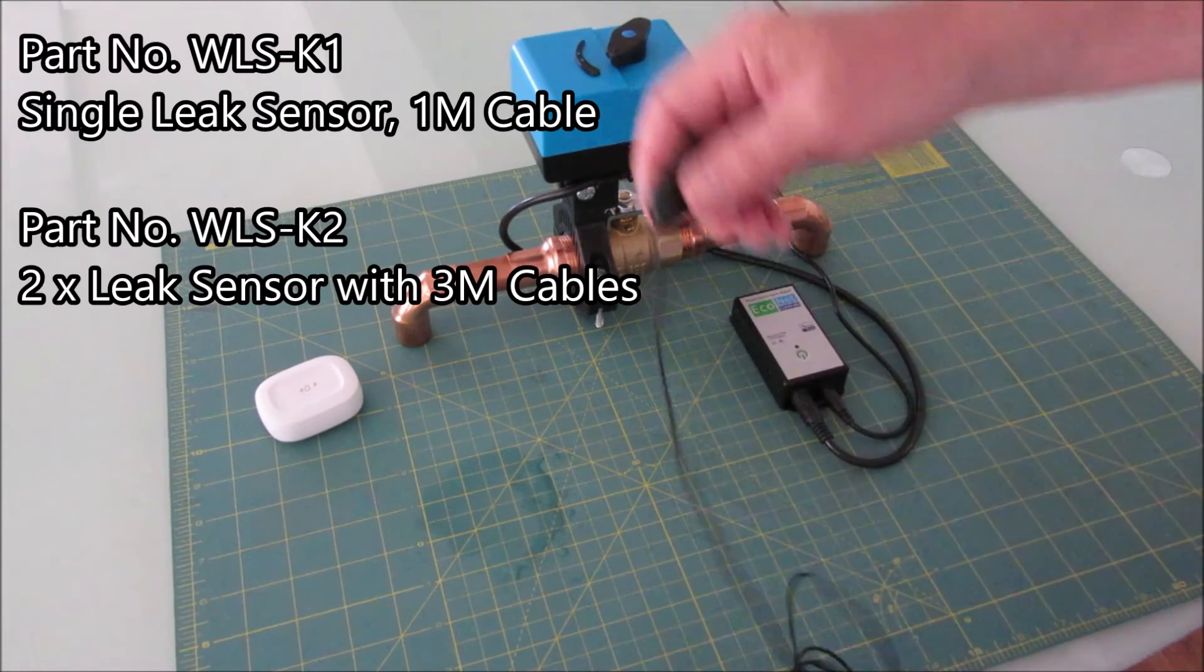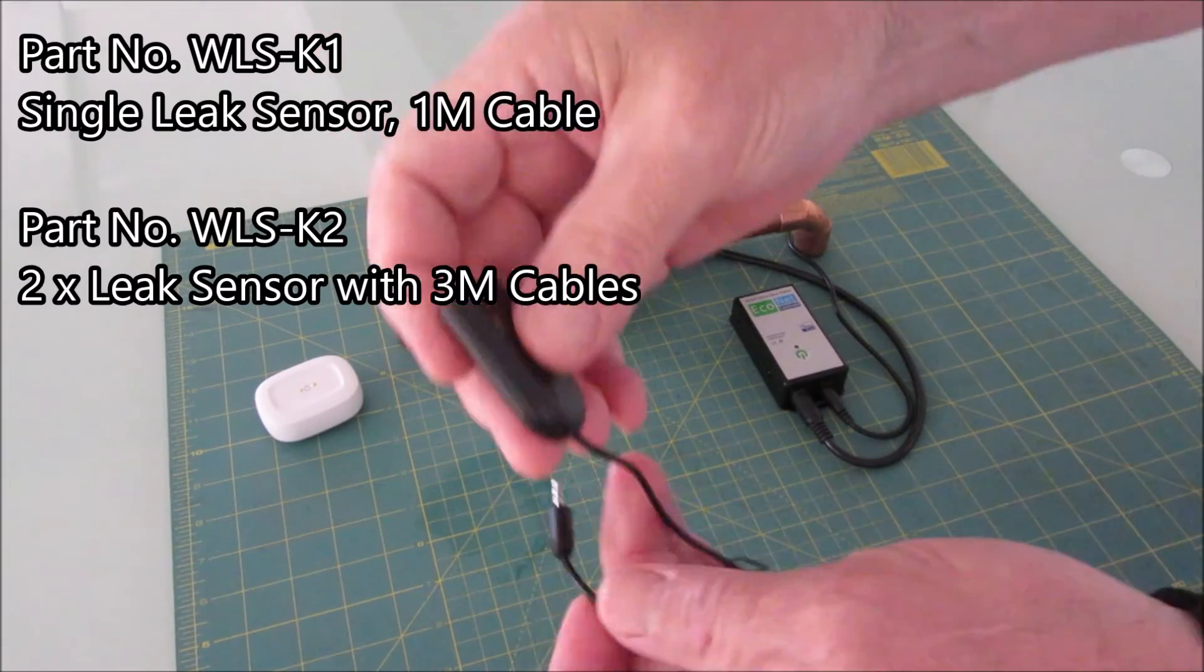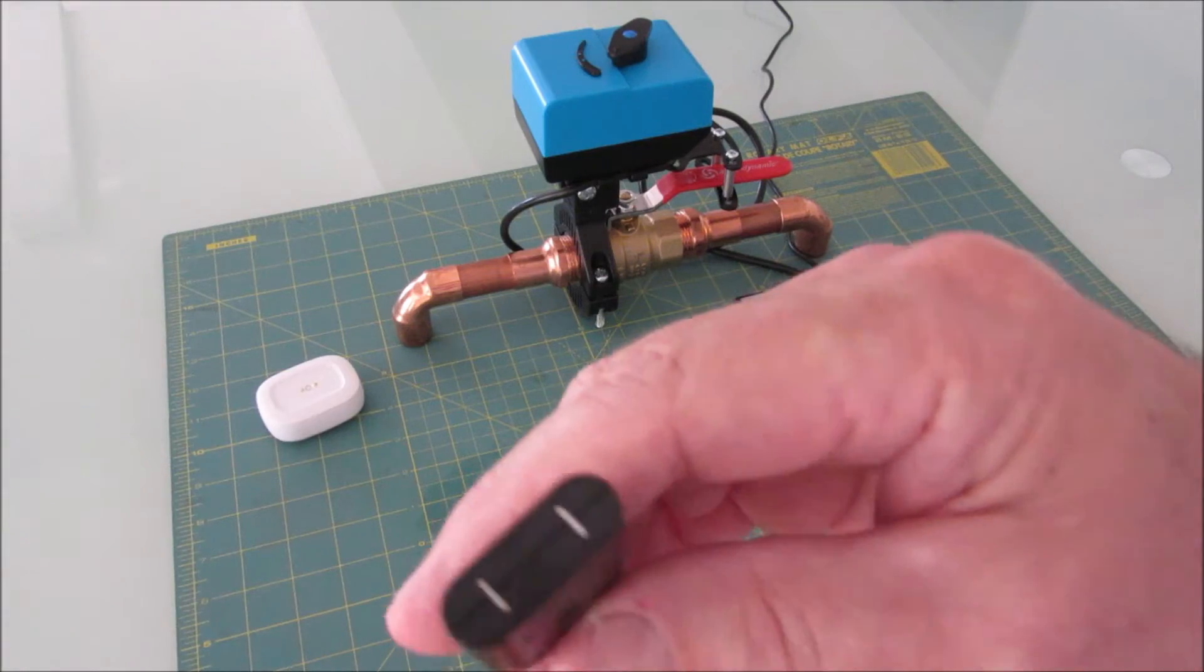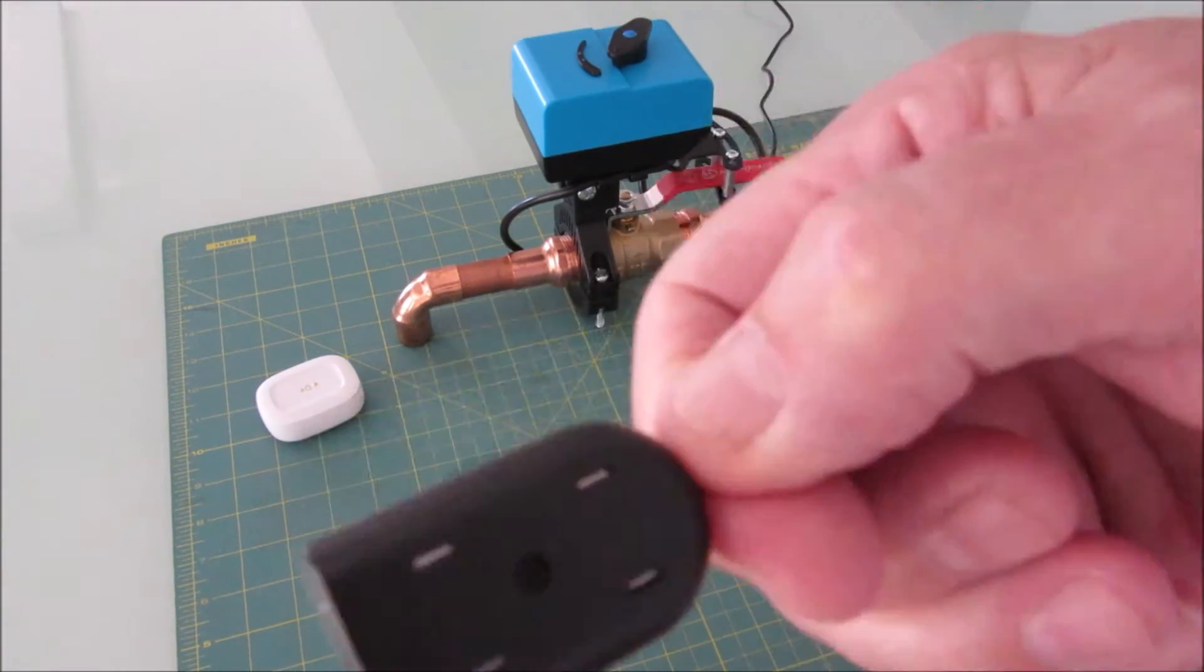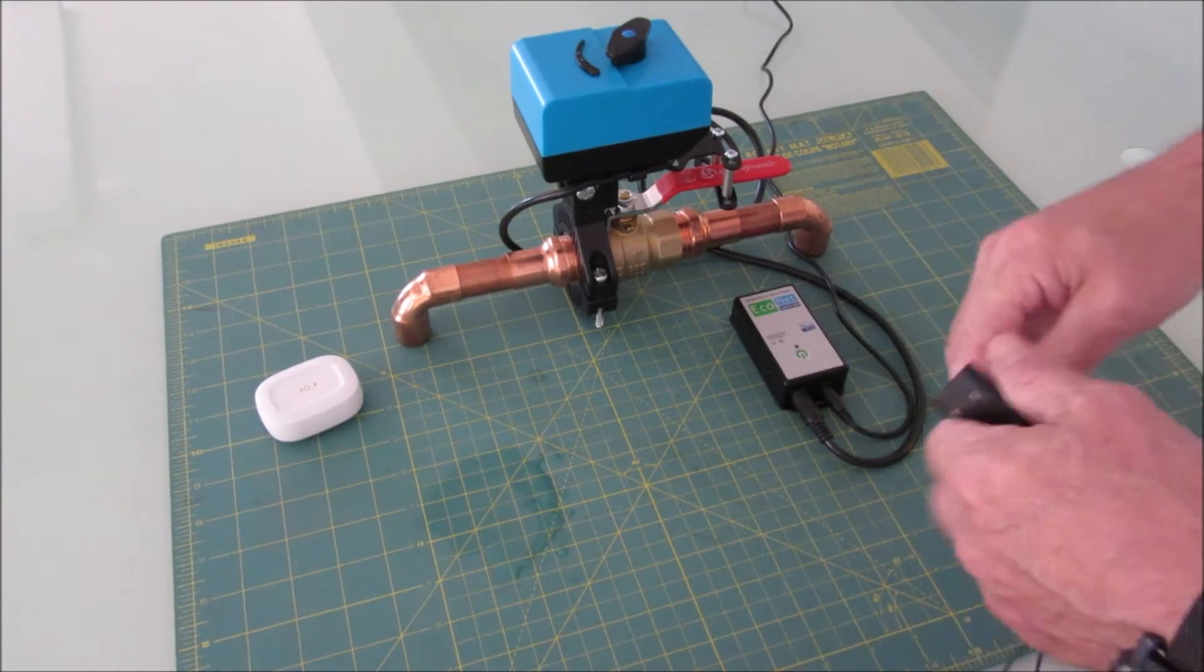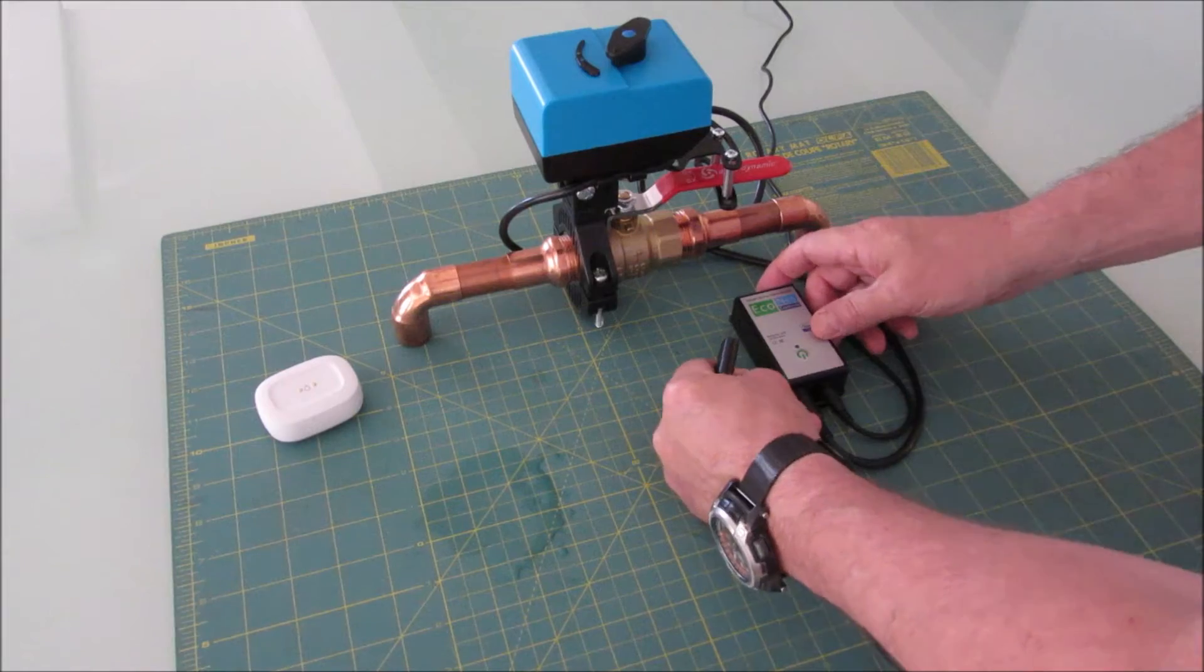The first one just includes this wireless leak sensor which has about a meter cable on it. It has probes on three sides, you can see. And basically you just plug it into the 2.5 port on this side of the Bulldog.